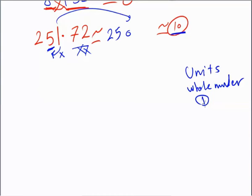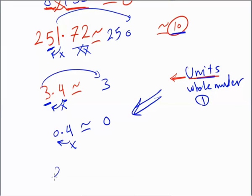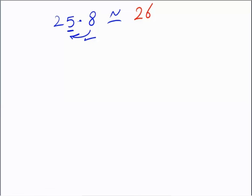For example: 3.4 approximated to the nearest unit. The units digit is 3. Before it is 4 — four or less, don't add — so answer is 3, cancel the decimal part. Another: 0.44 — units is 0, before it is 4, so still 0. Another: 25.8 approximated to nearest unit — units is 5, before it is 8 — eight gives — so it becomes 26.